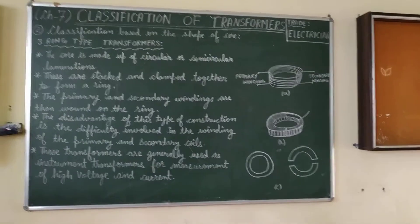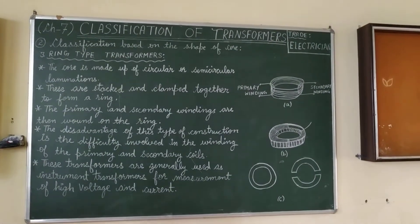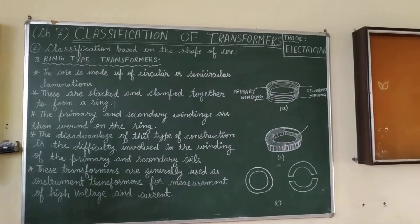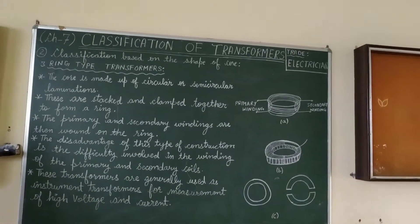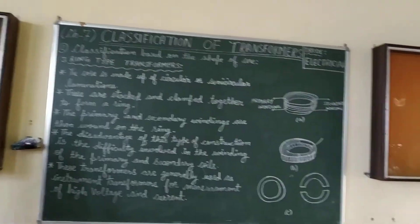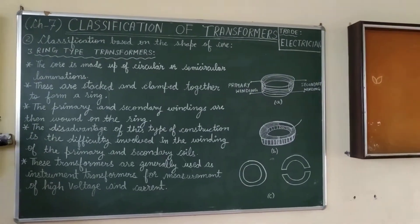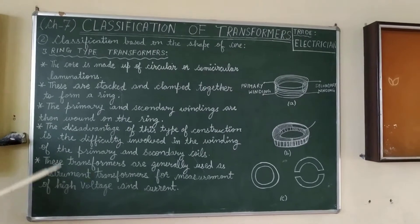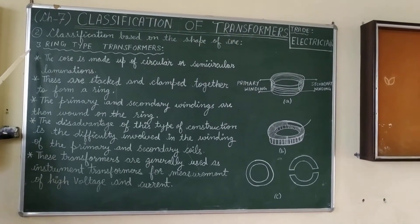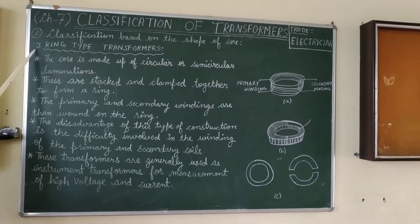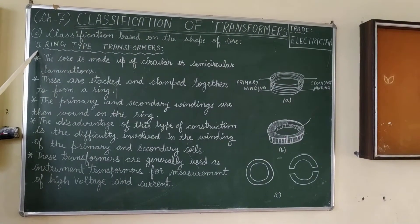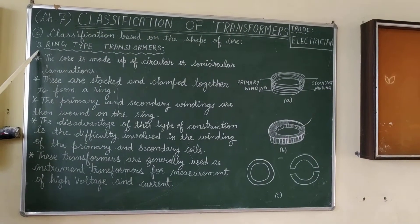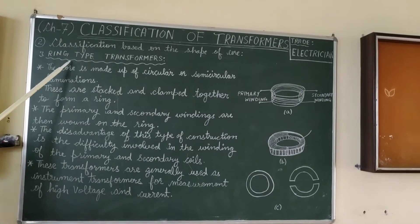The next topic is classification based on the shape of the core. We have studied the first two types: the shell type and the core type. Today we will study the third type, which is the ring type.